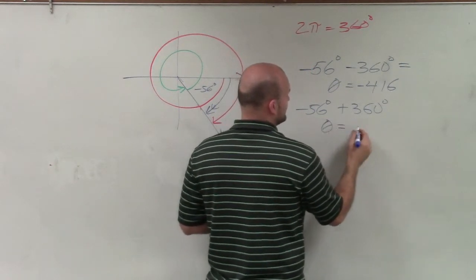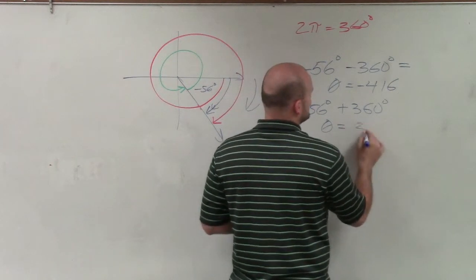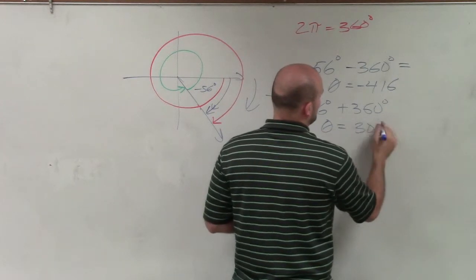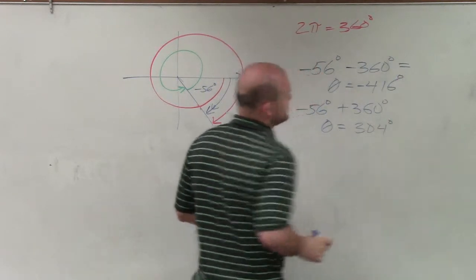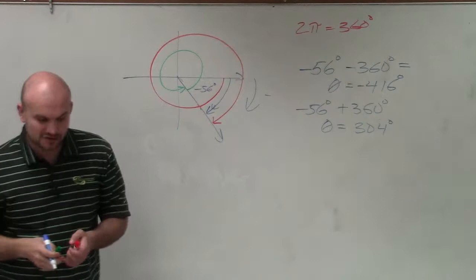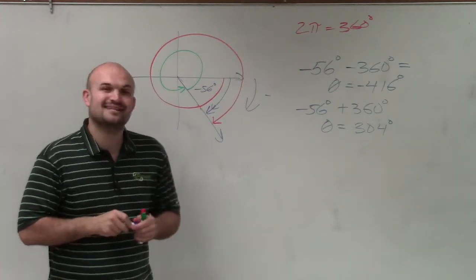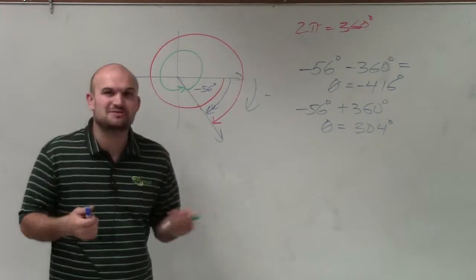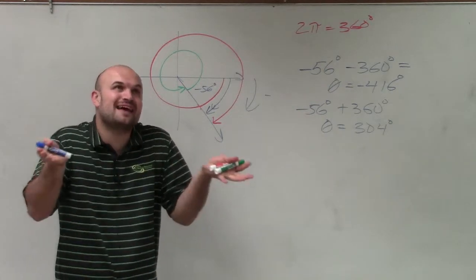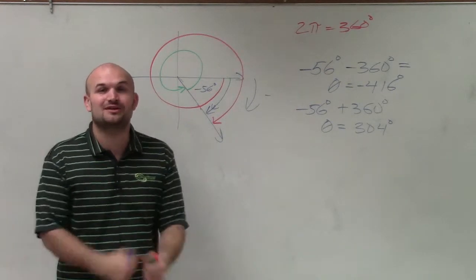So there you go, ladies and gentlemen, that is how you find the two smallest coterminal angles when given an angle that's not as regular, not an angle that we see as often as we like to. Thanks.